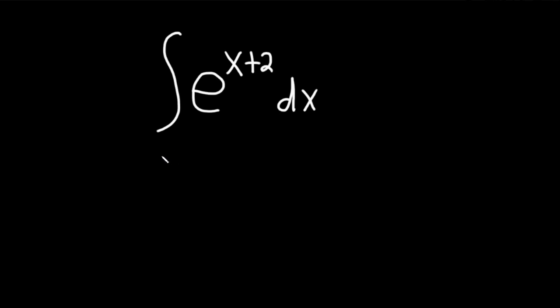So one way is to use just basic algebra. We can write this as e to the x times e to the 2, and then we have our dx.